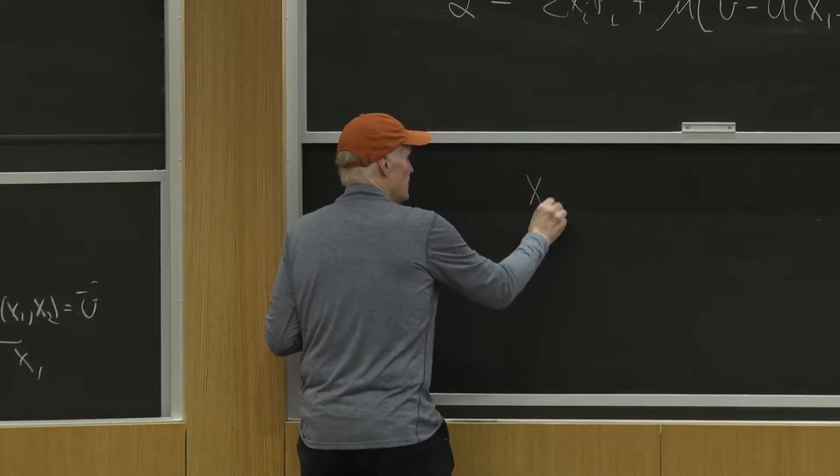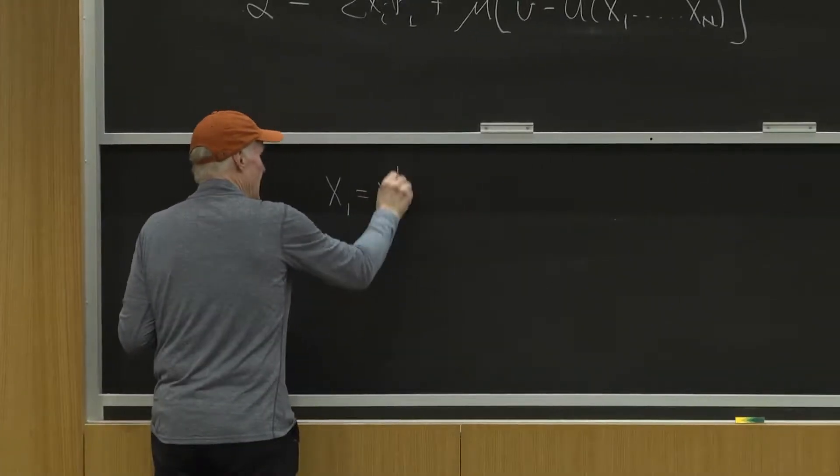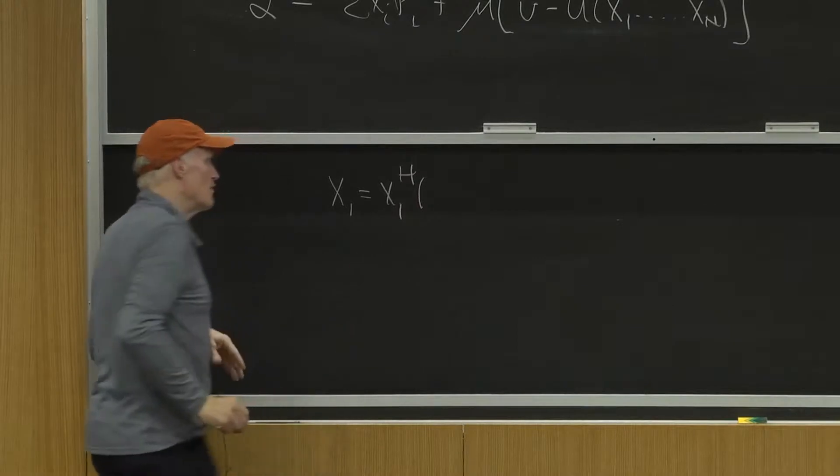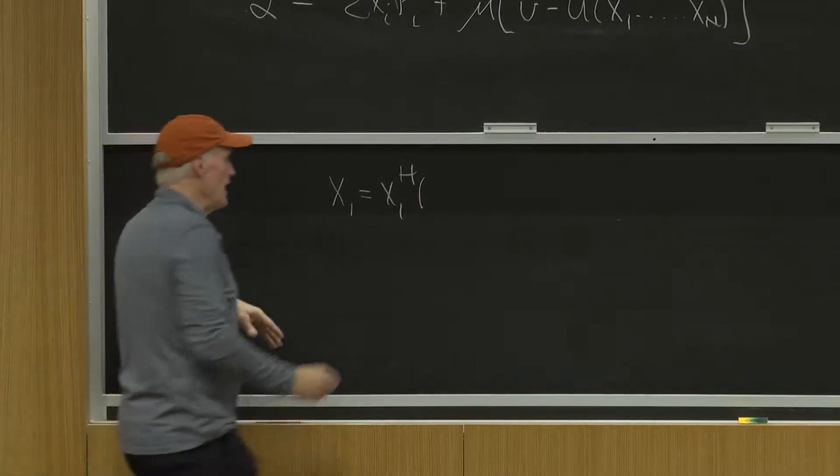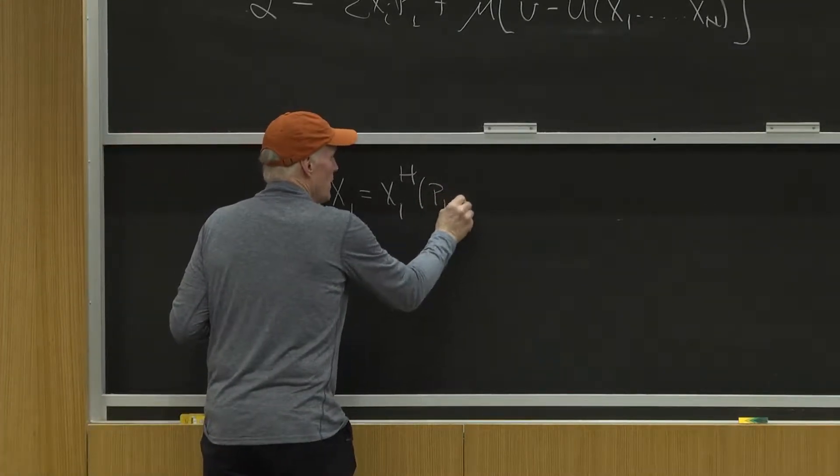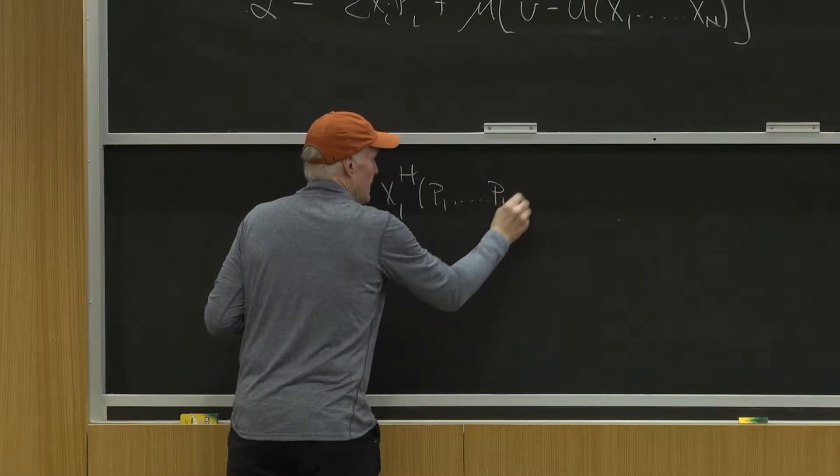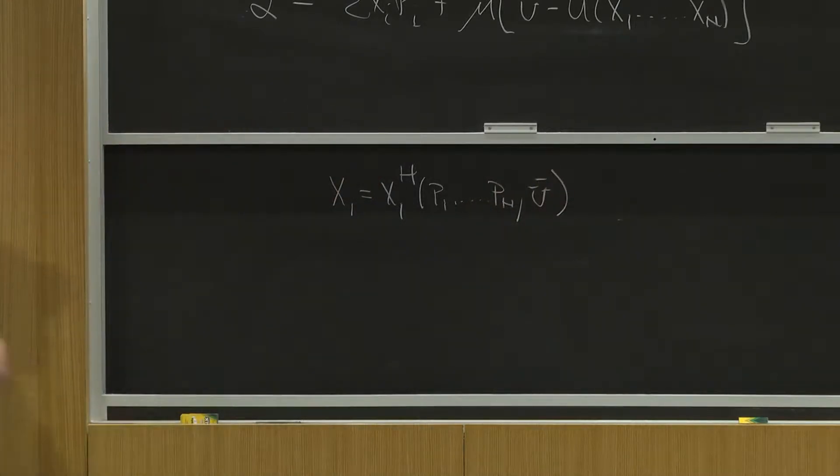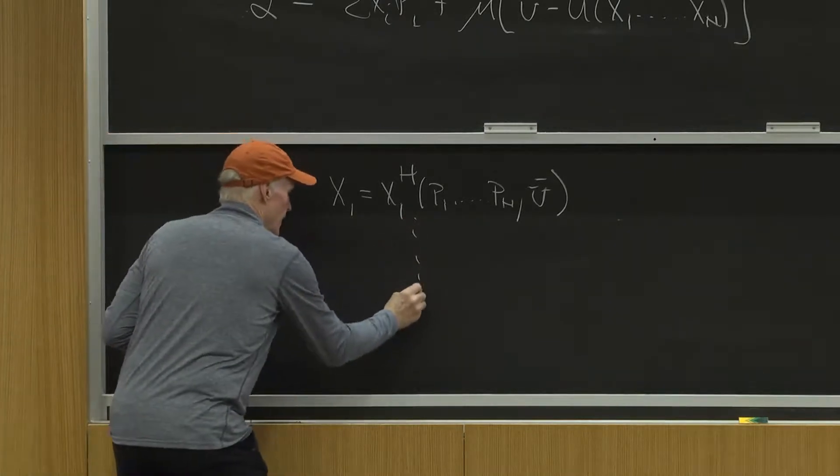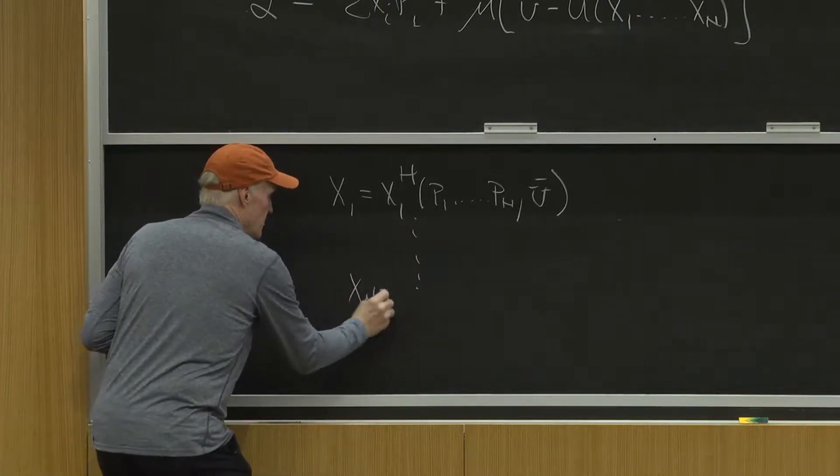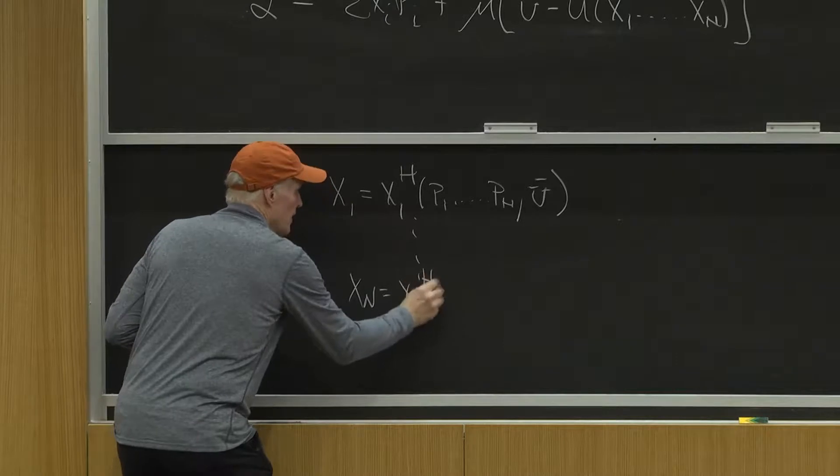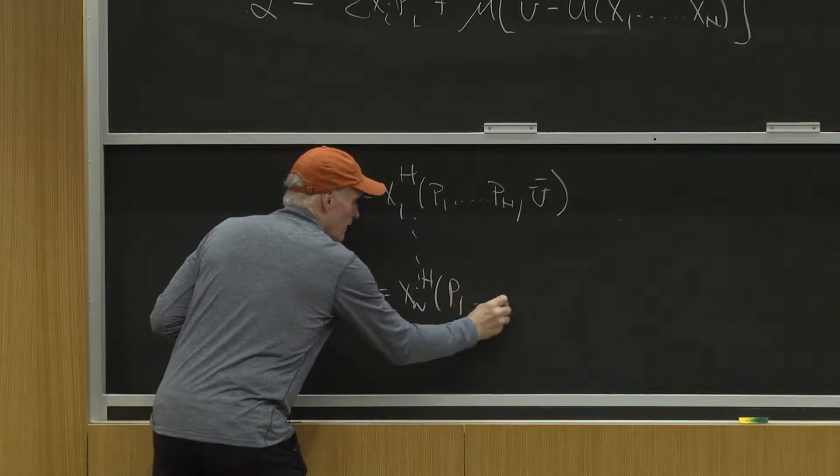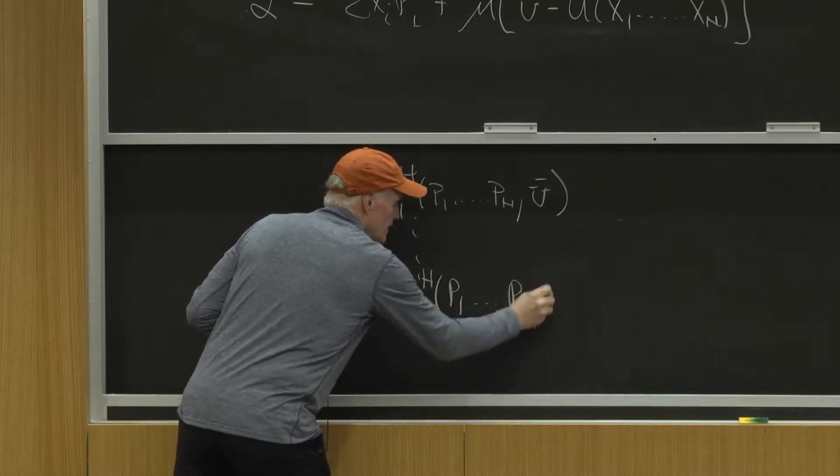And the Hicksian demand curves are x1 equals x1h. I'll put an h for Hicks instead of Marshall. x1h of P1 up to Pn u bar, down to xn equals xnh of P1 up to Pn u bar.